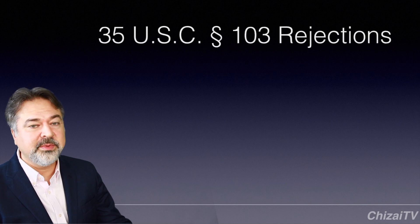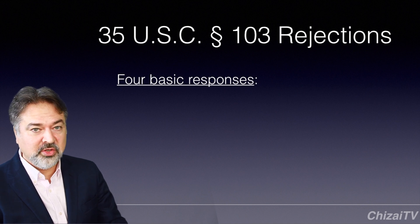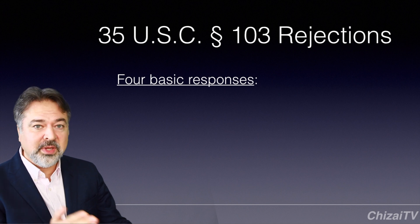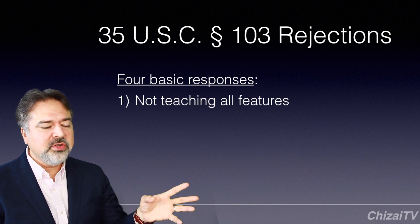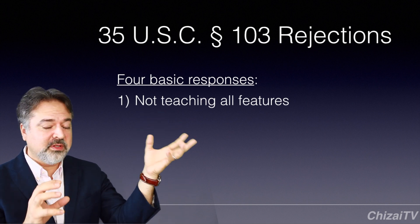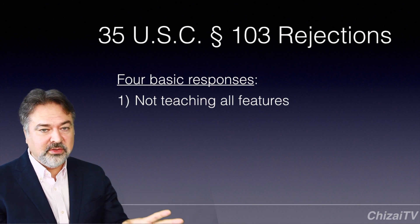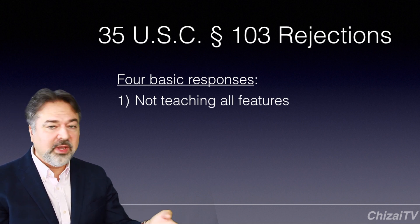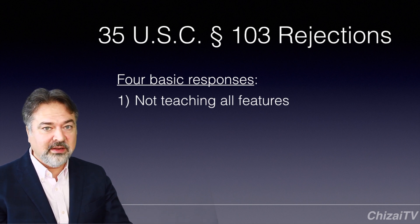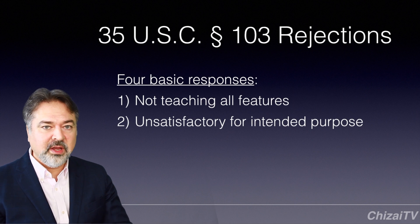For 103 rejections, there are basically four types of responses you can make during prosecution. If your case is on appeal you may have some other options, but basically these are the four responses you are going to use the most when you are traversing or arguing against the examiner. First: not teaching all the features. The examiner will cite usually two or more references — a primary reference and a secondary or more — and combine them to reject your claim. If those references do not disclose or teach all of the features of your claim, you can argue that the examiner does not understand the scope and content of the prior art. However, if the features are in the references, we have three other arguments we can use.